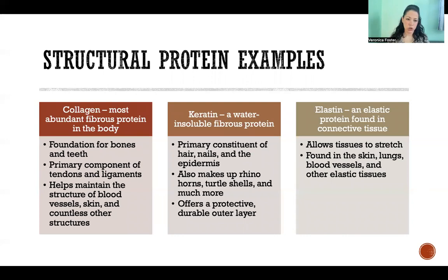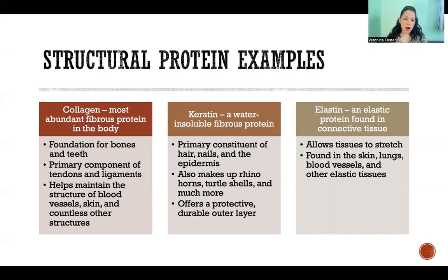Some common structural proteins are collagen, keratin, and elastin. Collagen is the most abundant fibrous protein in the body — a big, thick, dense protein that is a major component in connective tissue, making it strong, tough, and dense. It's the foundation for bones and teeth, it's what tendons and ligaments are primarily made of, and it helps maintain the structure of blood vessels, skin, and countless other structures in the body that include connective tissue.